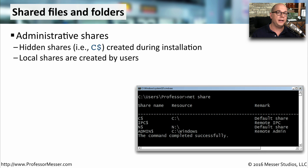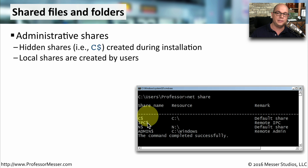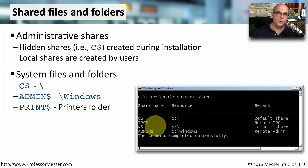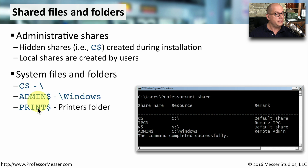Not only can you define shares on your system and allow people access to those shares, there are also a number of shares that have been administratively created by the operating system. These are very often hidden shares — you'll know they're hidden because they have a dollar sign right after them, and they're usually created during the installation of the operating system. Common examples include C$ which provides administrative access to the C drive, admin$ for the Windows folder, and print$ which provides access to the printers folder on the system.